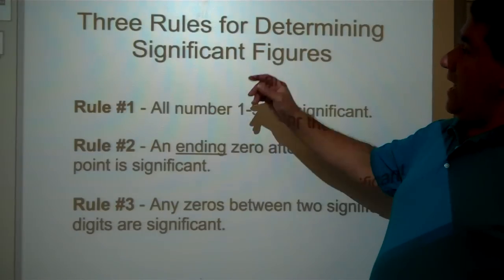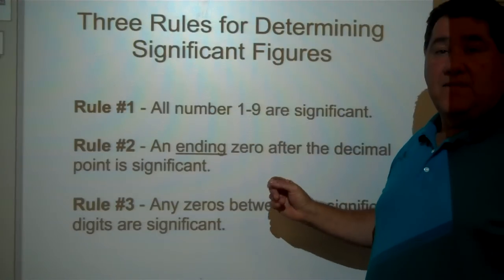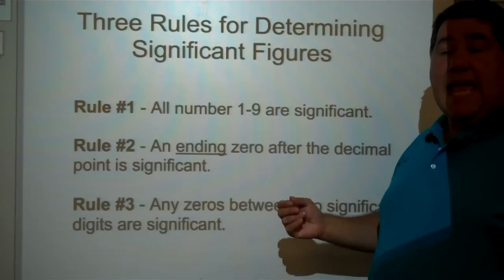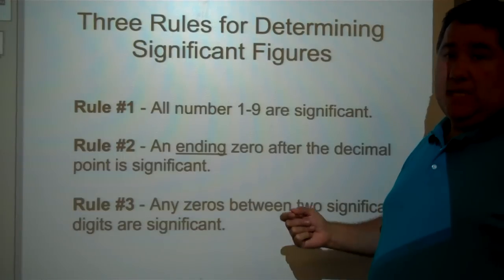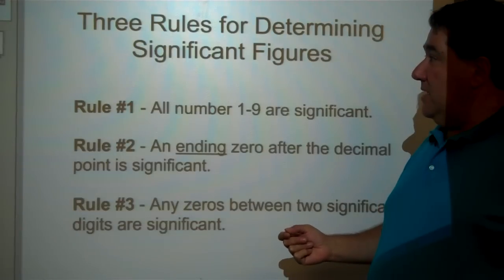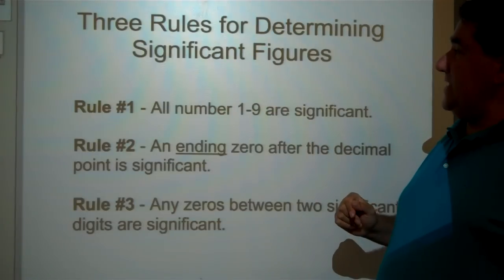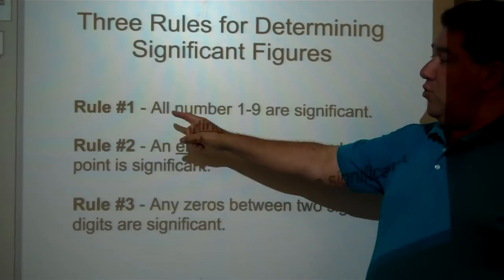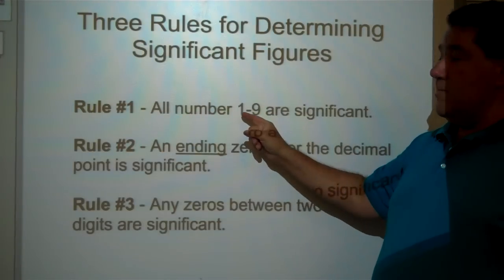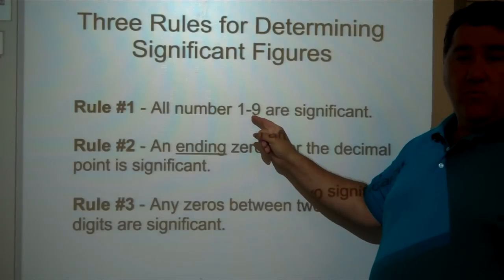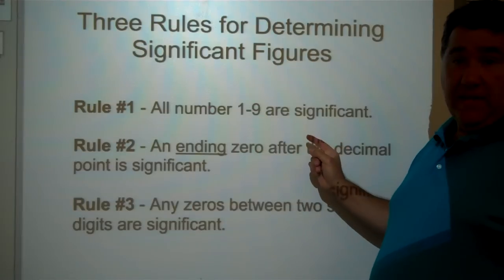We're going to show you how to compute the significant figures in any measurement you use in lab. The three rules for determining significant figures are: rule number one, all numbers one through nine are significant.